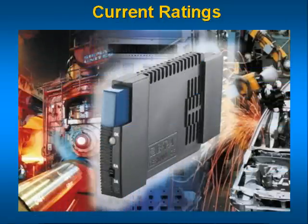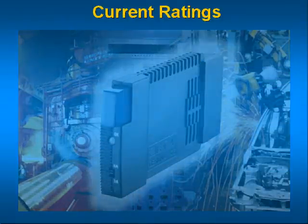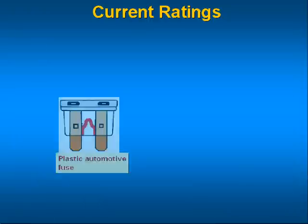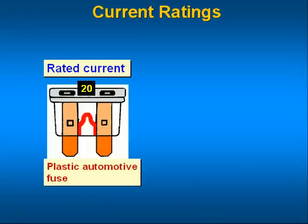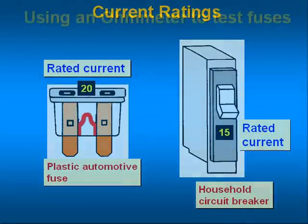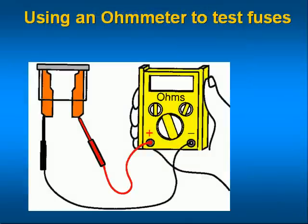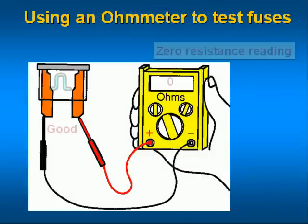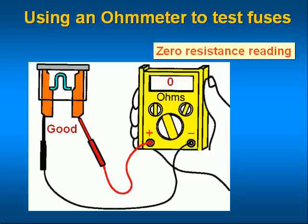Current and voltage ratings of fuses and circuit breakers are normally written on the component. The key parameter is the current rating. A fuse with a higher voltage rating can be used in a lower voltage circuit, provided the current rating is adequate. A reading of zero ohms means the fuse is good; an infinite reading means the fuse is bad.